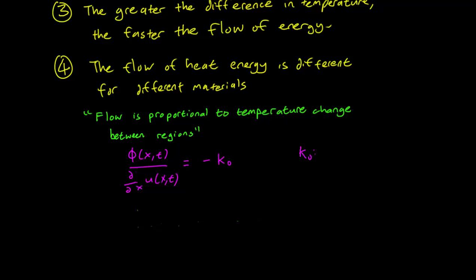k0 is known as thermal conductivity. And this constant tells you how quickly heat energy flows through that material. The higher the thermal conductivity,